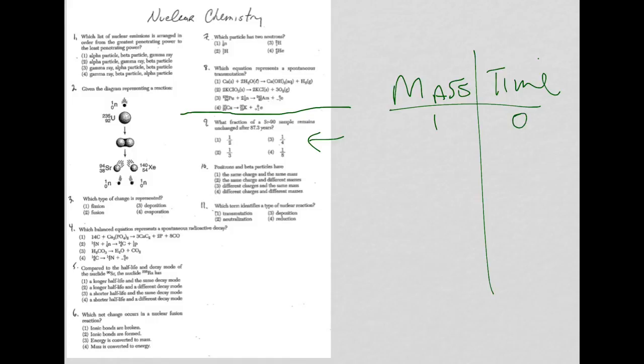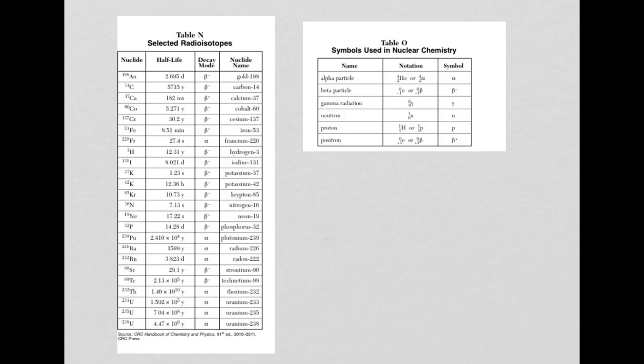Now, it's asking you about what's remaining after 87.3 years, so that's what we have to get to. We're dealing with strontium-90, so I need to go to the reference tables and find the half-life of strontium-90, which is 29.1.